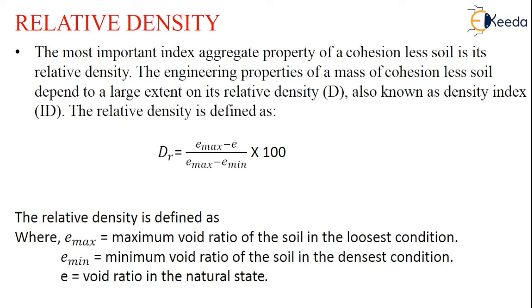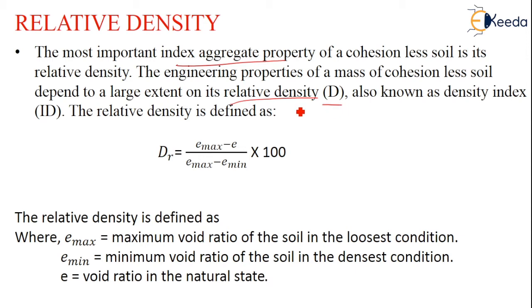Relative density is a very important index aggregate property of a cohesionless soil. The engineering properties of a mass of cohesionless soils also depend to a large extent on its relative density, that is D. It is sometimes known as density index also.